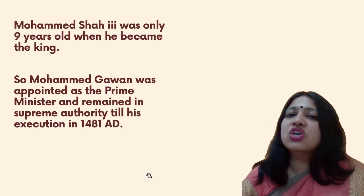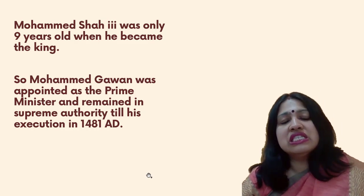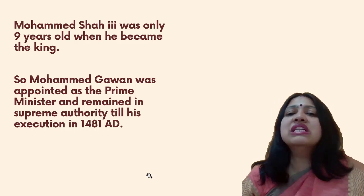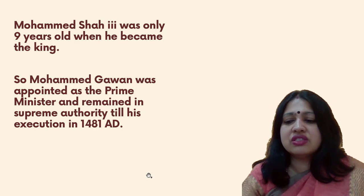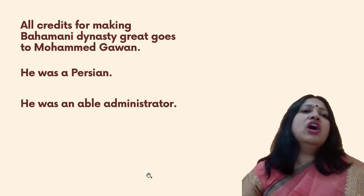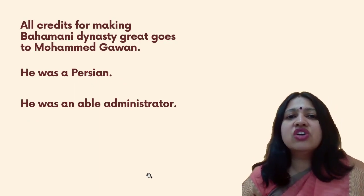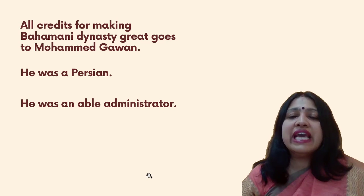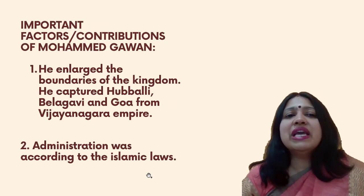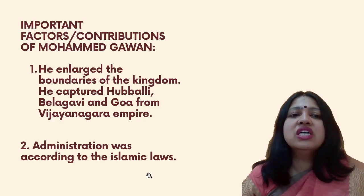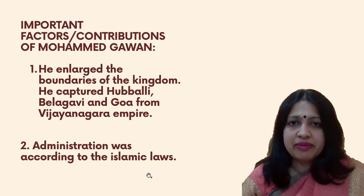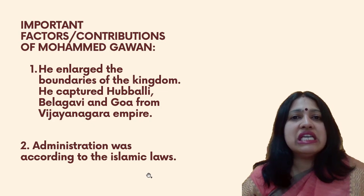All credit for making the Bahamani dynasty great goes to Muhammad Gavan. He was a Persian by origin and an able administrator. His contributions include: he enlarged the boundaries of the kingdom, capturing Huppalli, Belagavi, and Goa from the Vijayanagara Empire. Administration was conducted according to Islamic law. He encouraged revenue and postal services, and fixed taxes on the basis of a land's fertility and irrigation facility rather than merely its size.